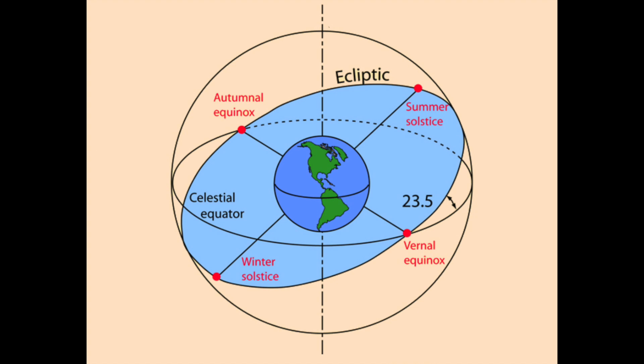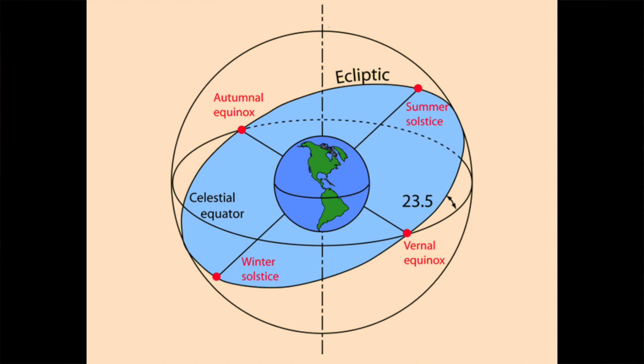On the celestial sphere there are two circles critical for us. The first is the celestial equator — simply the projection of the Earth's equator out onto the celestial sphere. The second is the ecliptic, where the plane of the Earth's orbit around the Sun intersects the celestial sphere. The ecliptic is the imaginary line the Sun follows over the course of the year. The Earth's axis is inclined by 23.5 degrees, so the celestial equator and the ecliptic are inclined with respect to each other by that same 23.5 degrees.